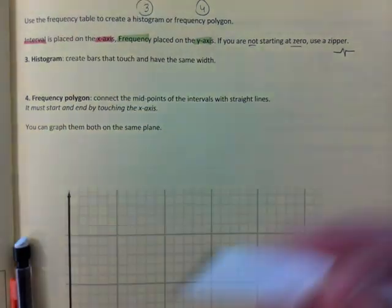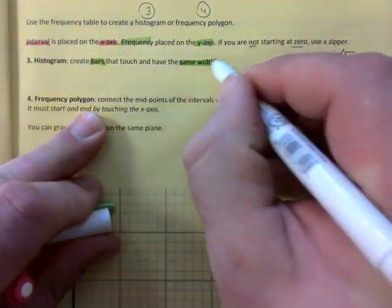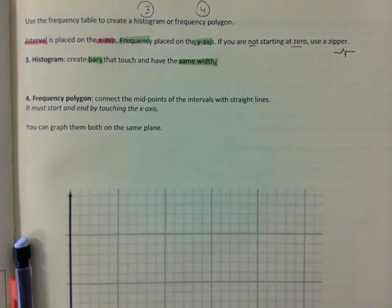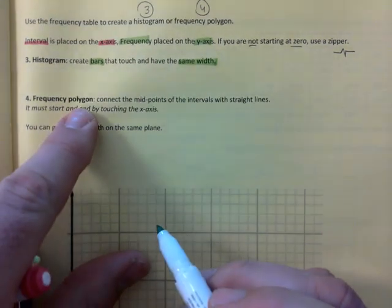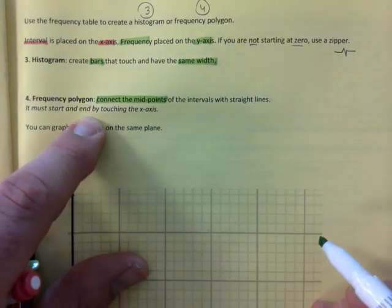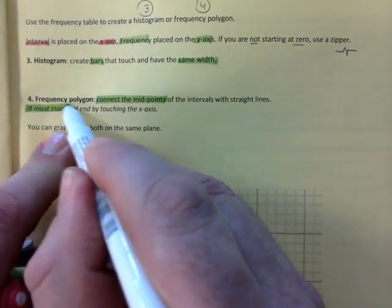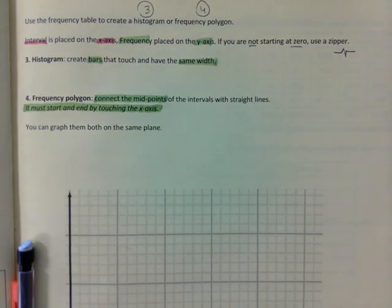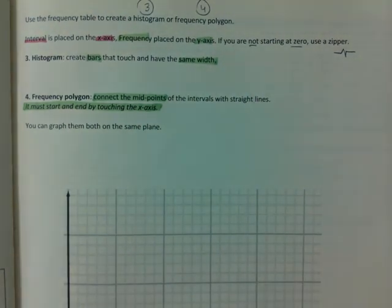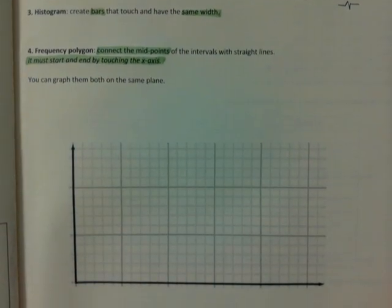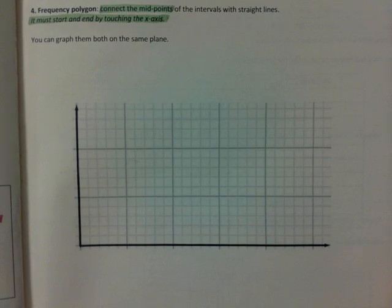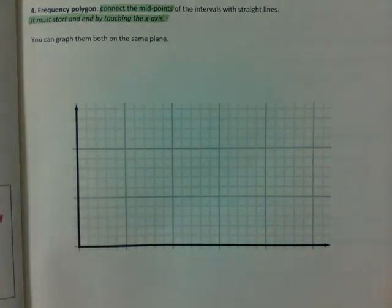Histogram create bars that touch and have the same width. Very important. And frequency polygon, you basically connect the midpoints. It must start and end by touching the x-axis. That's a key there. So if you want to get full marks, watch out for the things I just highlighted. You can graph them both on the same plane. And we're going to do that. And I provided you a nice grid there. That's perfect.